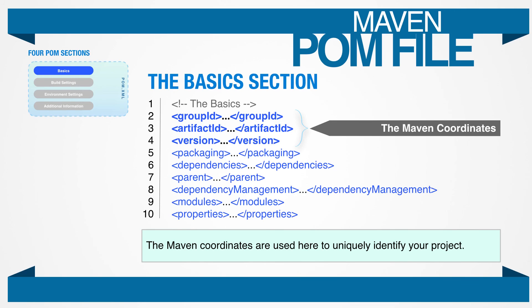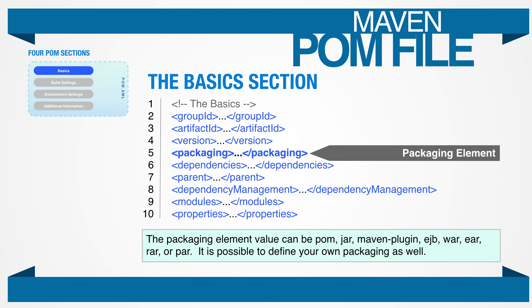The Maven coordinates in this section define the Maven coordinates for this project. The packaging element determines the artifact that we're building. The value can be POM, JAR, Maven plugin, EJB, WAR, EAR, RAR, or PAR.